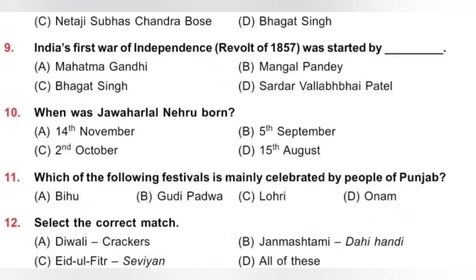Question 9: India's First War of Independence — Revolt of 1857 — was started by ___. Options: A. Mahatma Gandhi, B. Mangal Pandey, C. Bhagat Singh, D. Sardar Vallabhbhai Patel. Due to British rule, there was widespread discontent in the country. This led to the Revolt of 1857, also known as India's First War of Independence. It was started by Mangal Pandey. Option B is the correct answer.